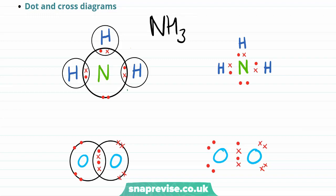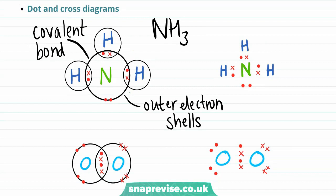The black circles have been used to indicate outer electron shells. Each of the covalent bonds formed between nitrogen and hydrogen is indicated by the overlap of these outer electron shells.